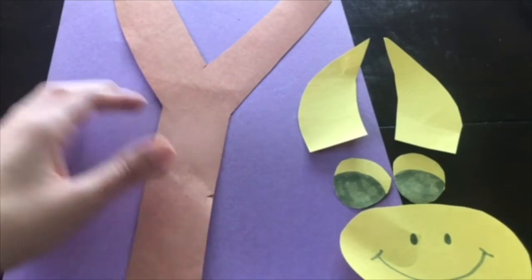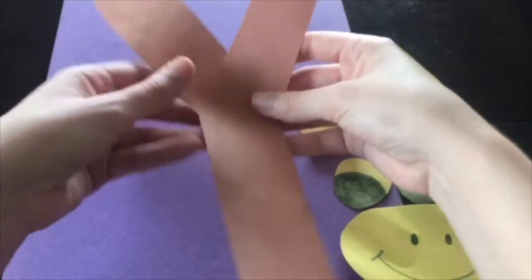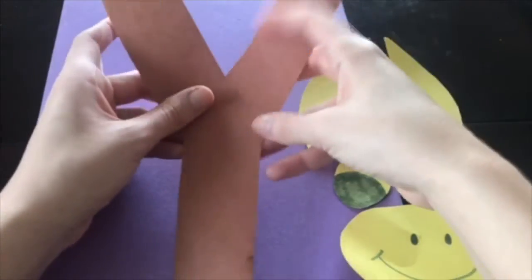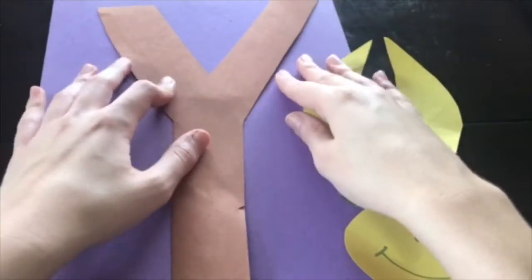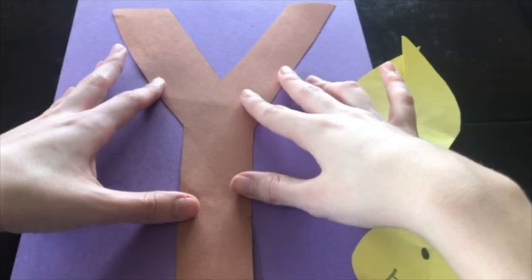Now it's time to start gluing. We'll start with our big Y - this is going to be the body of the yak. I'm going to take this and glue it onto my different colored construction paper.